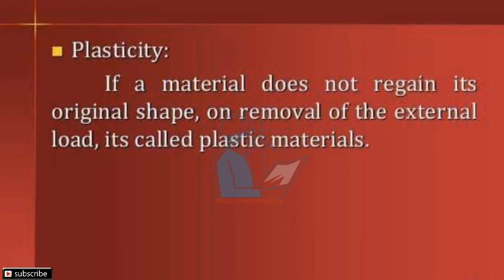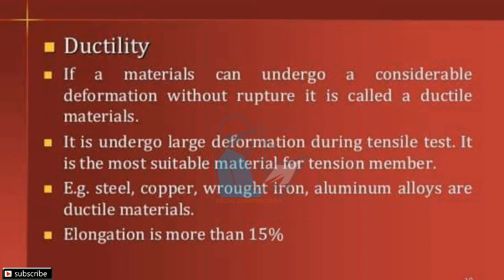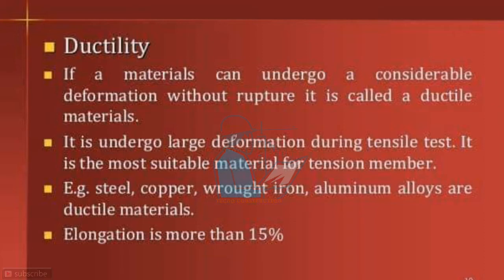In a spring it is different — it is vice versa. Ductility: if a material can undergo considerable deformation without rupture, it is called a ductile material. It undergoes large deformation during a tensile test and is more suitable for tension members. For example, steel, copper, wrought iron, and aluminium alloys are ductile materials, with elongation greater than 15 percent.